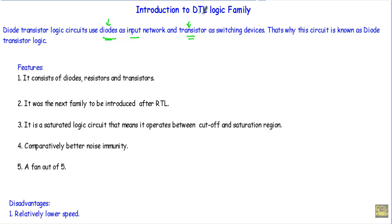There are some features of this DTL logic family. First, the DTL logic circuit consists of diodes, resistors, and transistors. It is the next family to be introduced after RTL, meaning the RTL logic